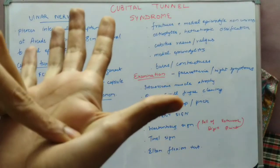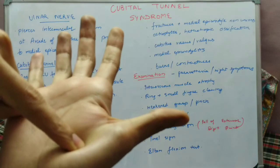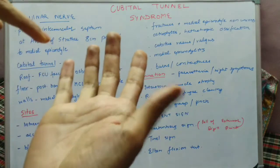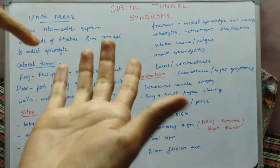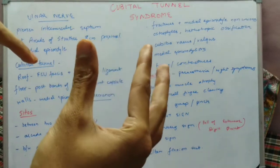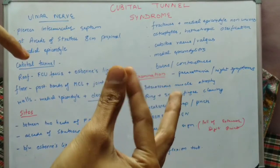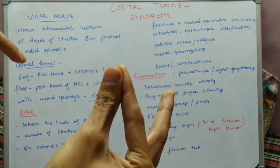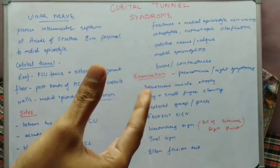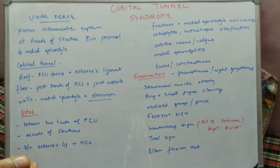Pinch is also lost because of the adductor pollicis — a muscle of the hand on the thenar aspect supplied by the ulnar nerve — which causes adduction of the thumb. As adduction is lost, pinch is weakened.